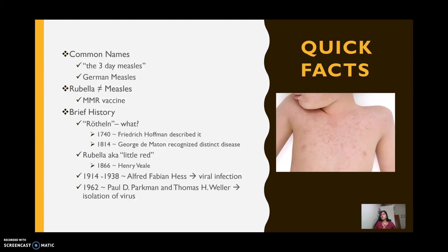But because Rotlin was so hard for most others to pronounce, in 1866, British surgeon Henry Vale was the first one to coin the term rubella in place of Rotlin. Rubella was basically just Latin for "little red," evidently referring to the little red rashes that you can see on an infected person.